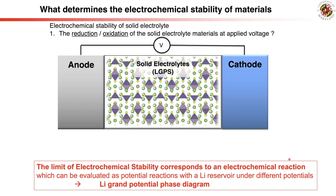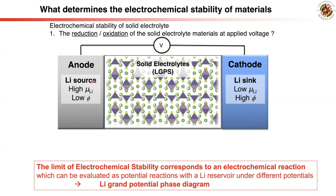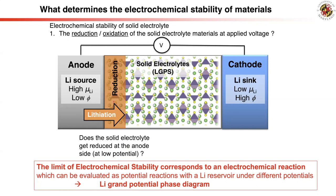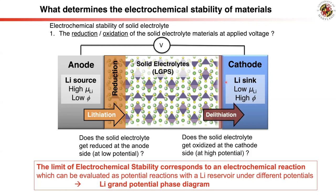Electrochemical stability of solid electrolyte is determined by the reduction and oxidation reactions of solid electrolyte materials at applied voltage. As shown in this schematic of a cell, the anode is a lithium source with high lithium chemical potential and low potential, and lithiates the solid electrolyte causing reduction. The cathode is a lithium sink with low lithium chemical potential and high potential, and delithiates the solid electrolyte causing oxidation. These reactions can be evaluated using a technique called the grand-potential phase diagram.